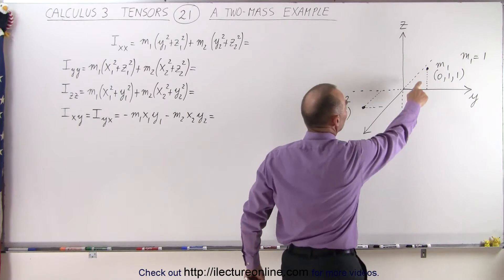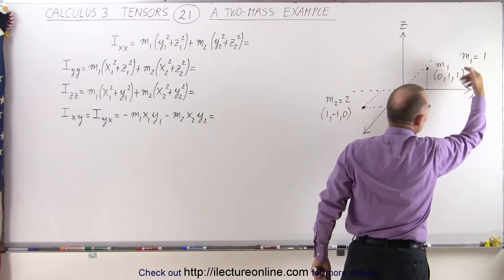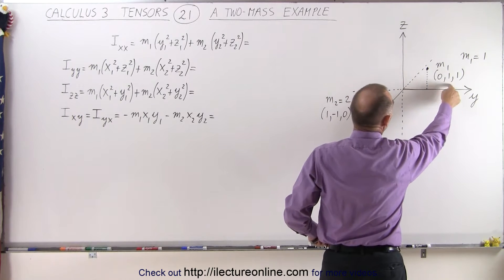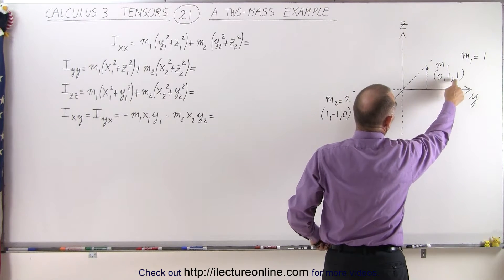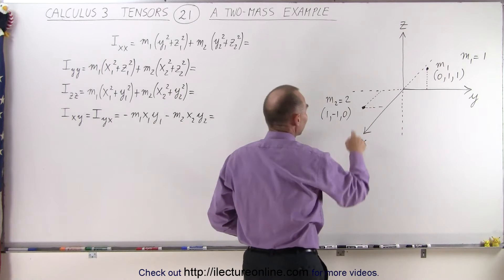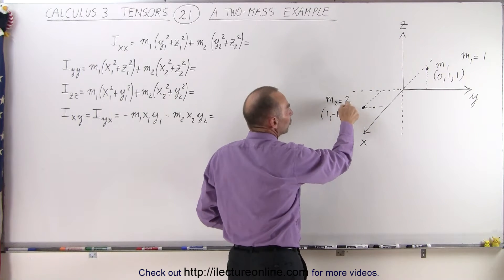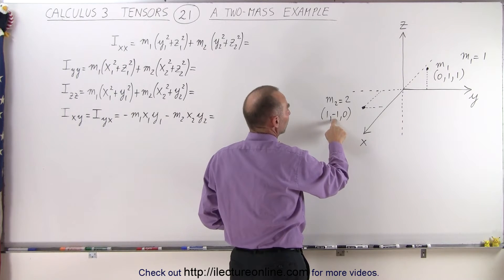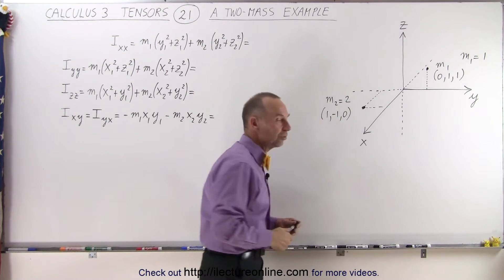We have mass 1 equal to 1, let's say 1 kilogram, whatever the units are. And the position is (0, 1, 1). So x equals 0, y equals 1, z equals 1. And we have a second mass which is equal to 2, let's say 2 kilograms. And the position is x equals 1, y equals negative 1, and z equals 0.